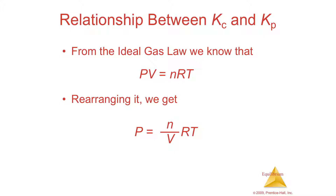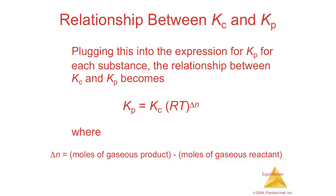You can convert between the concentration equilibrium constant and the pressure equilibrium constant using the ideal gas law. Since PV = nRT, solving for pressure gives P = (n/V)RT. Substituting in, you get: Kp equals Kc times RT raised to the change in moles of gas, Δn. So you can easily convert between Kc and Kp.